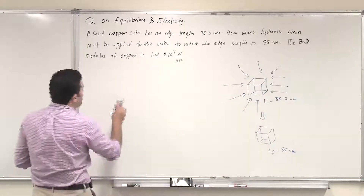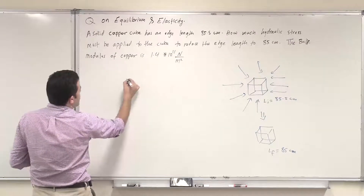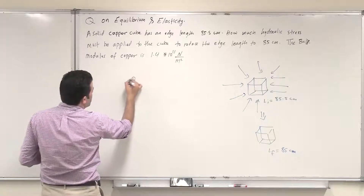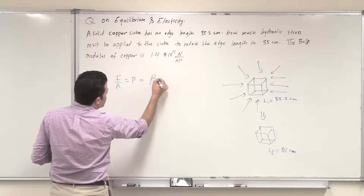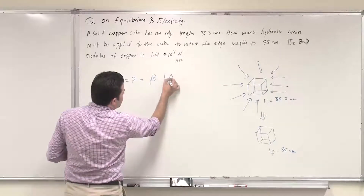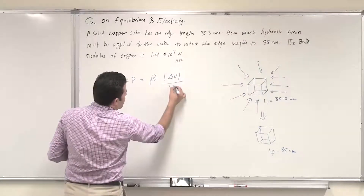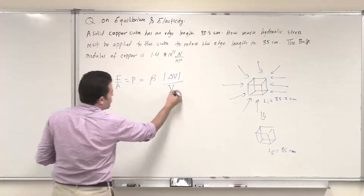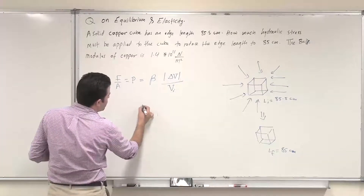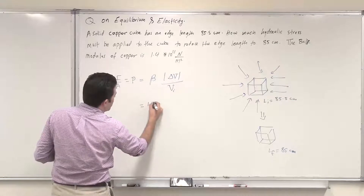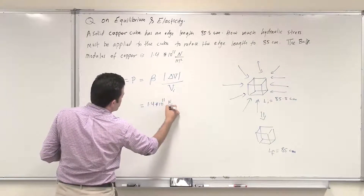We need to find the hydraulic stress. The hydraulic stress, which is force per area, equals beta — the bulk modulus — multiplied by the absolute value of the change in volume divided by the original volume. The bulk modulus of copper is given as 1.4 × 10 to the power 11 newton per meter squared.